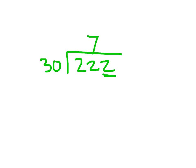7 times the 30 gets me 210, right? And we'll subtract that. That leaves 12. 12 is less than the 30 there. Nothing left to bring down. So we have 7 remainder 12.